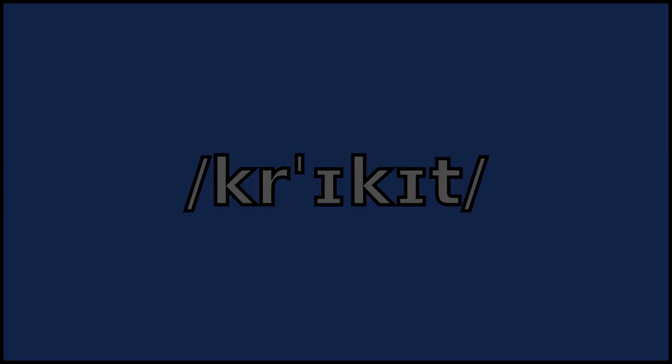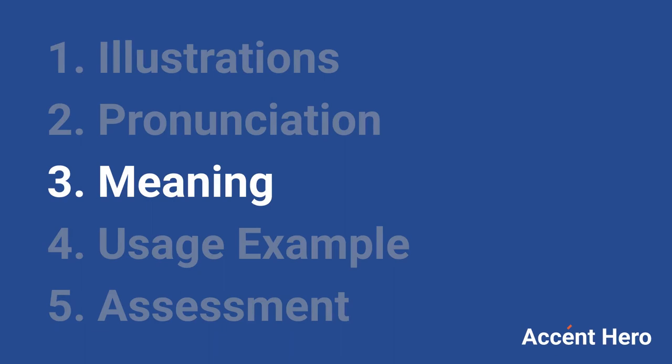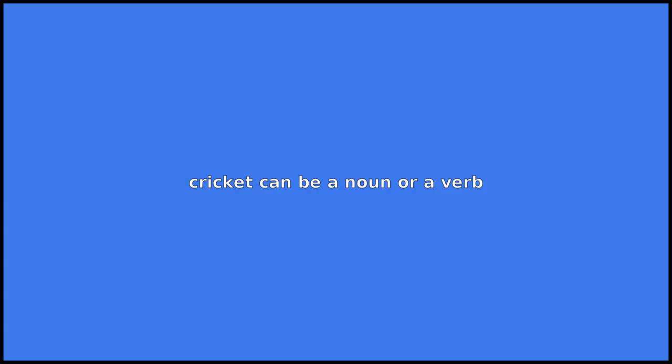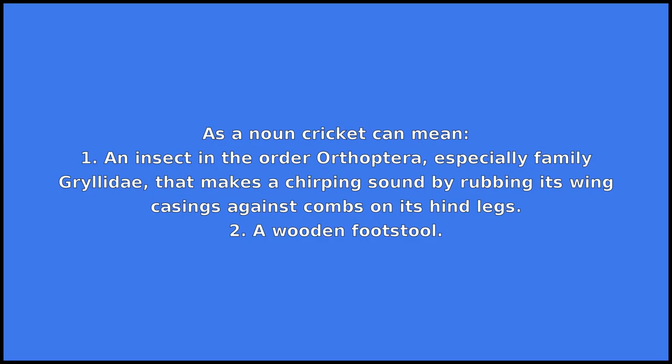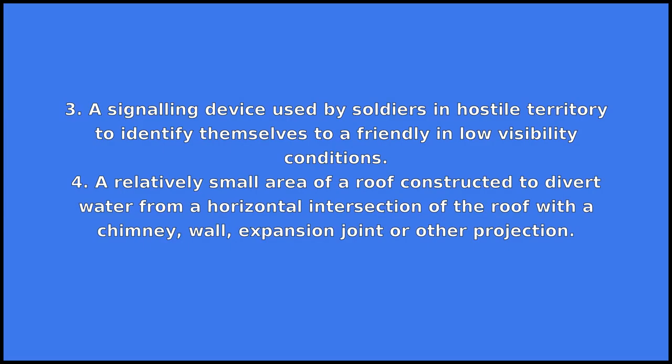Cricket can be a noun or a verb. As a noun, cricket can mean: one, an insect in the order Orthoptera, especially family Grillidae, that makes a chirping sound by rubbing its wing casings against combs on its hind legs; two, a wooden footstool; three, a signaling device used by soldiers in hostile territory to identify themselves to a friendly in low visibility conditions.